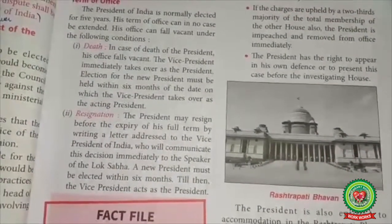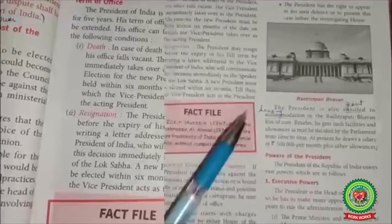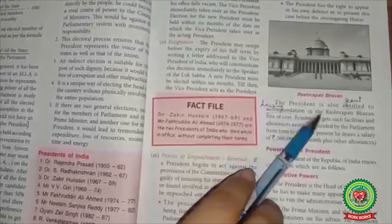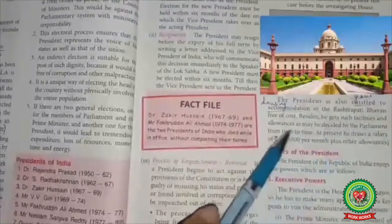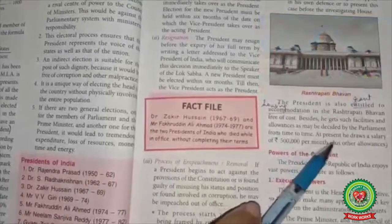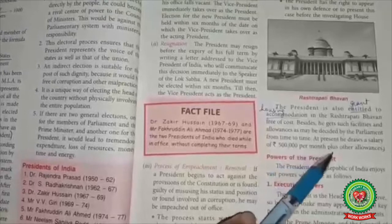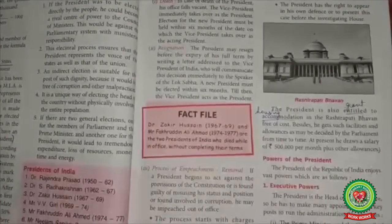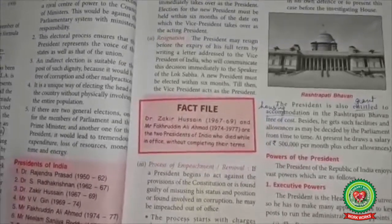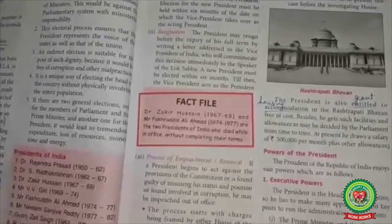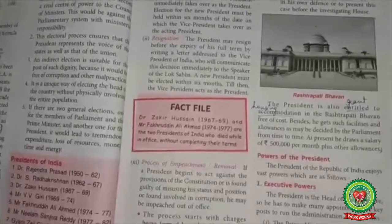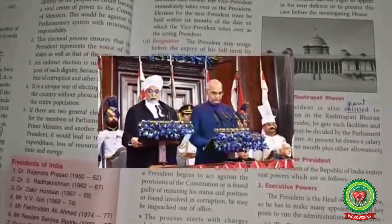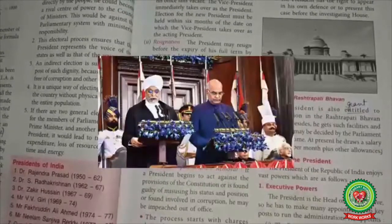During this process, the President has the right to defend himself through an authorized counsel. The President is also entitled to accommodation in Rashtrapati Bhawan free of cost, and gets such facilities and allowances as may be decided by Parliament from time to time. At present, he draws a salary of Rs 5 lakh per month plus other allowances. The oath of the President is administered by the Chief Justice of India, and in his absence by the most senior judge of the Supreme Court.